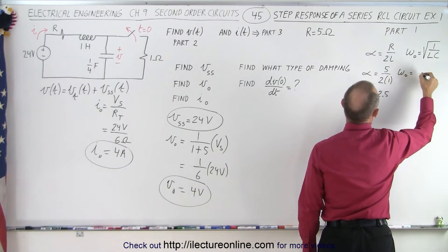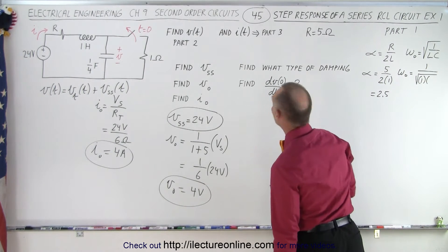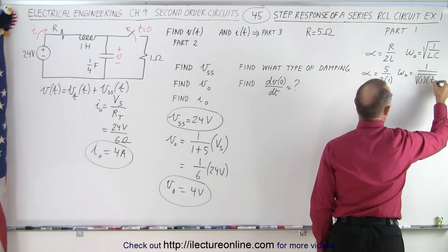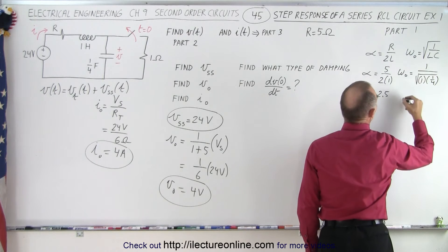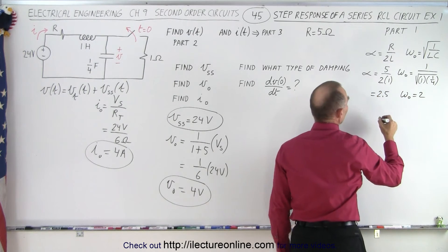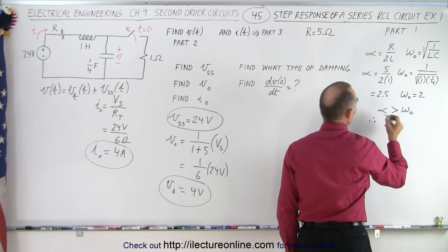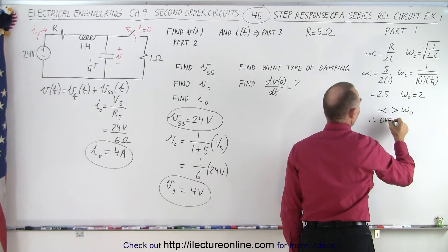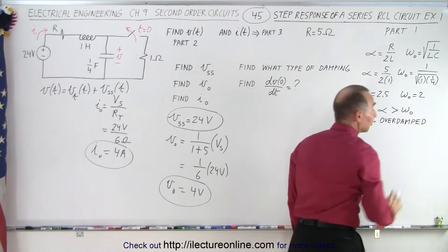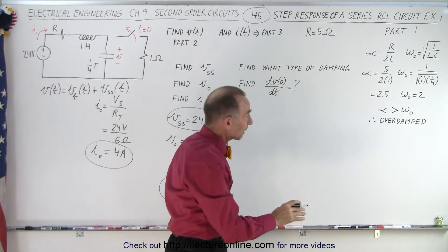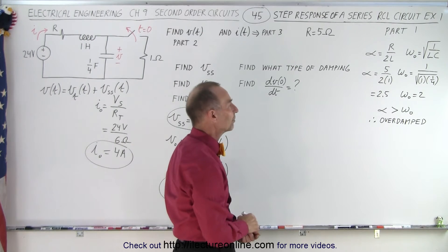For omega naught, that equals 1 over the square root of L times C — L is 1 and C is 1/4. The square root of 1/4 is 1/2; bringing it to the numerator gives omega naught equal to 2. So in this case alpha (2.5) is larger than omega naught (2), and therefore this is what we call overdamped. When alpha is bigger than omega we have overdamped; when alpha equals omega, critically damped; when alpha is smaller than omega, underdamped.